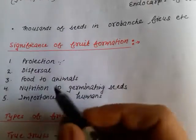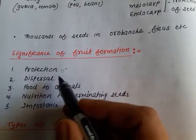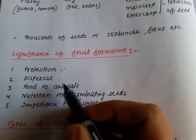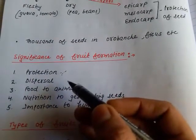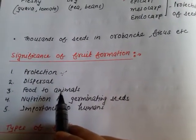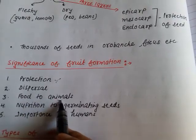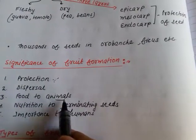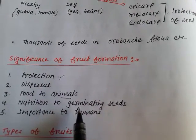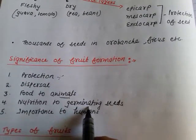The next point is dispersal — fruits help the seeds in dispersal to distant places. Then, food to the animals: especially fleshy fruits provide food to animals who act as dispersing agents for the seeds. The fourth importance is nutrition to the germinating seeds — some fruits provide nutrition to the germinating seeds as well as the developing seedlings.